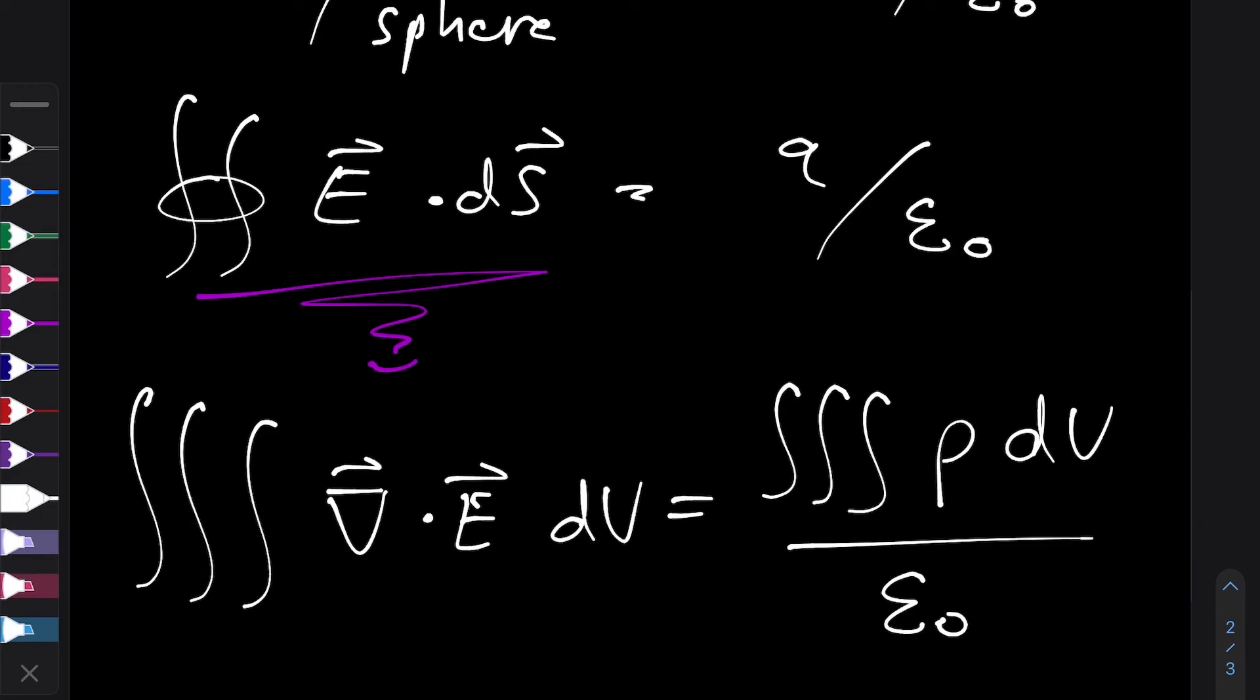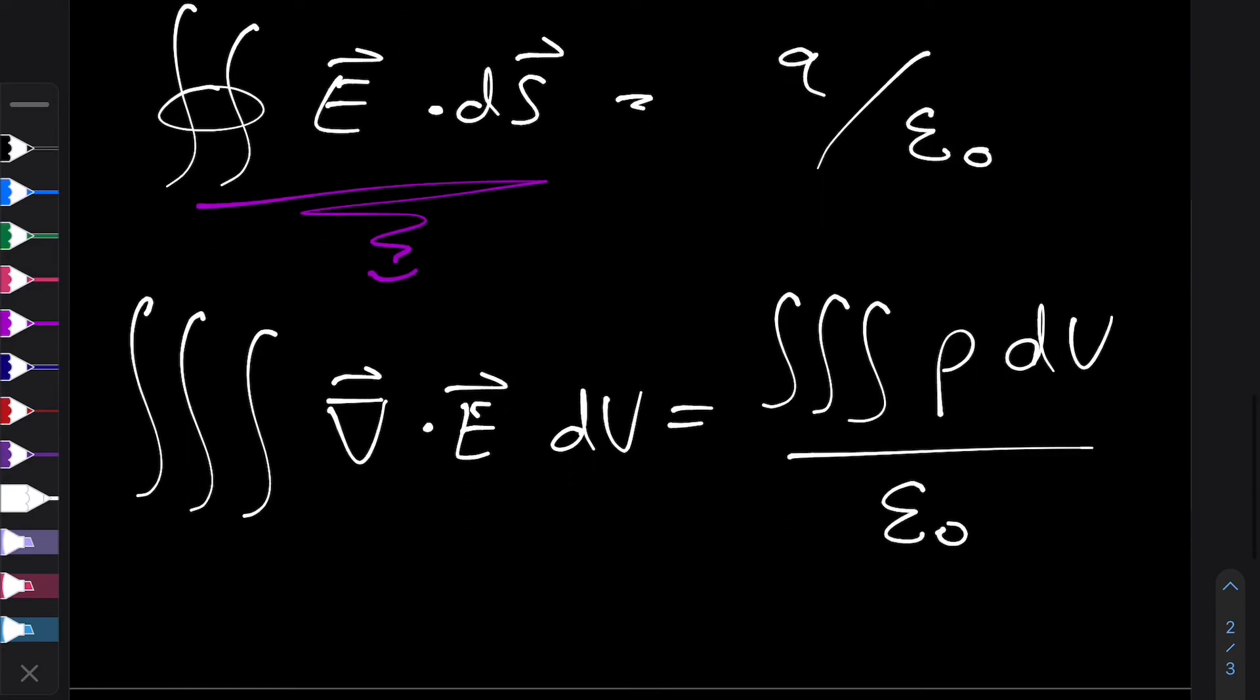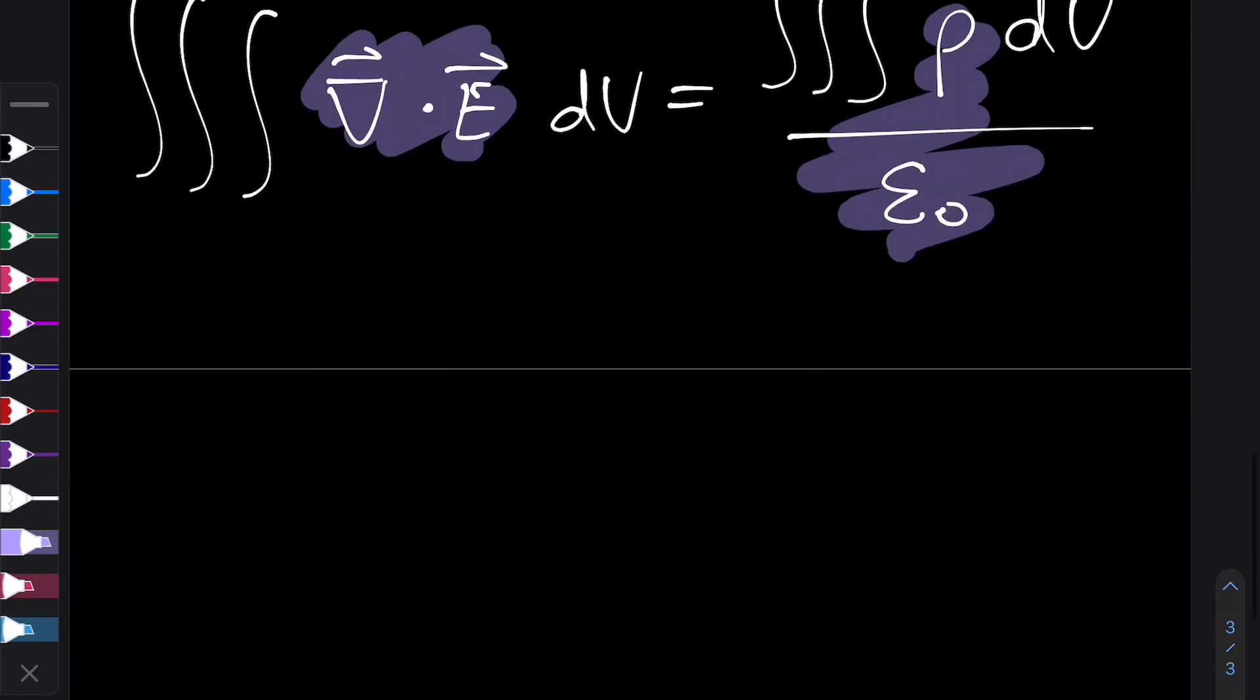So charge density is the same idea as mass density, where it's charge per unit volume. So now, because this is true for any closed surface, it's true for any volume enclosed in that surface. So we can, what we can do now is equate integrands and say, this is exactly the same as this, and that gives